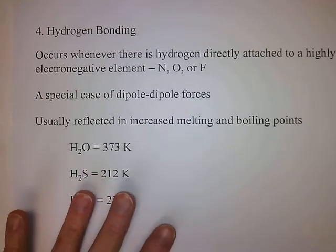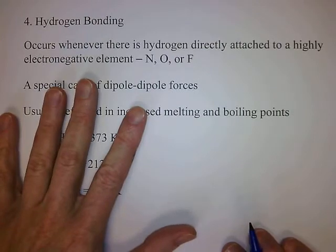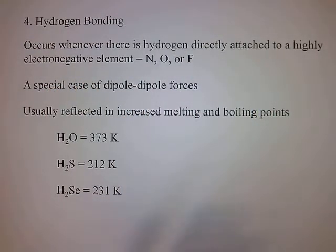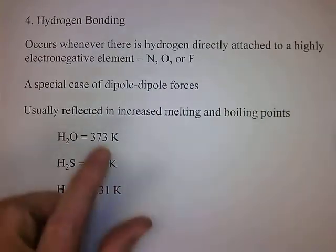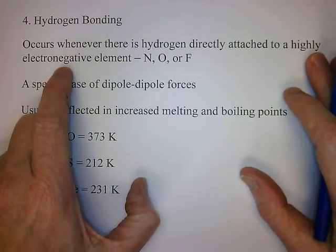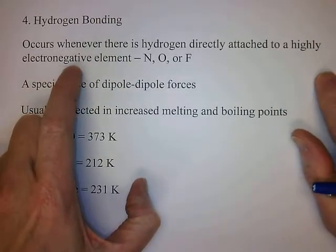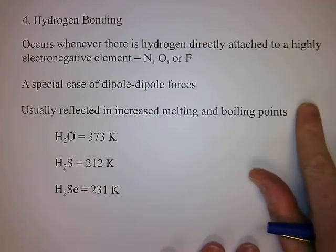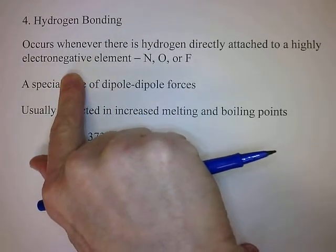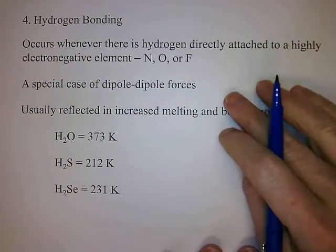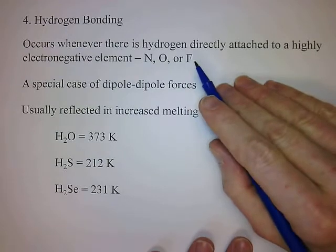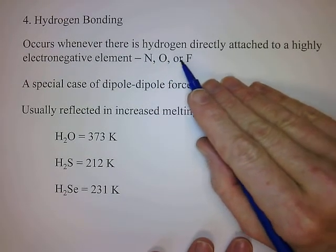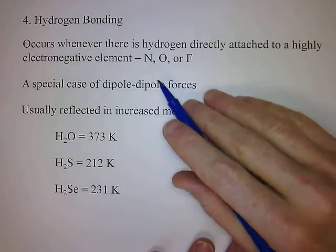Last is hydrogen bonding. This is a special case of dipole-dipole forces — it occurs whenever there is hydrogen directly bonded to a highly electronegative element. What's a highly electronegative element? One that really wants electrons. Electronegativity is the attraction for electrons in a bond. The three most electronegative elements are fluorine, oxygen, and nitrogen, with fluorine being the highest, followed by oxygen, then nitrogen.